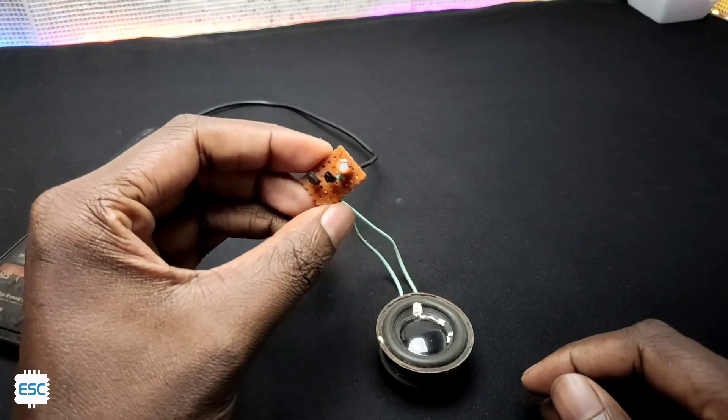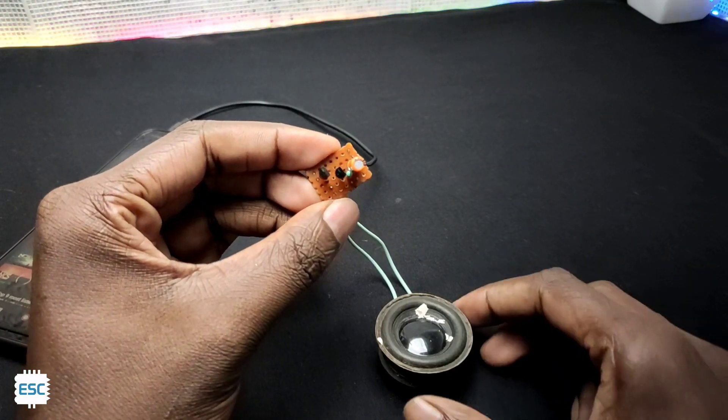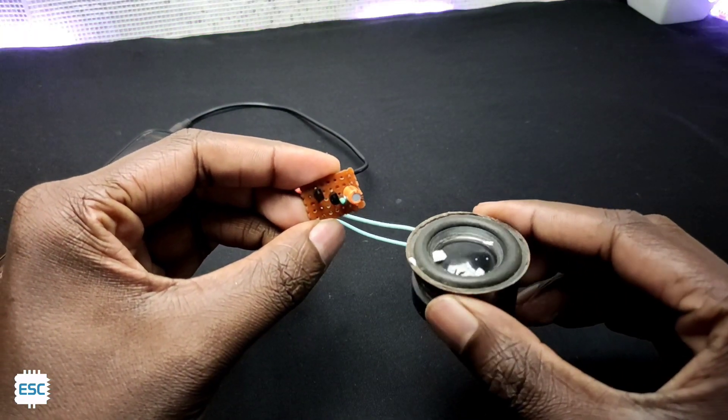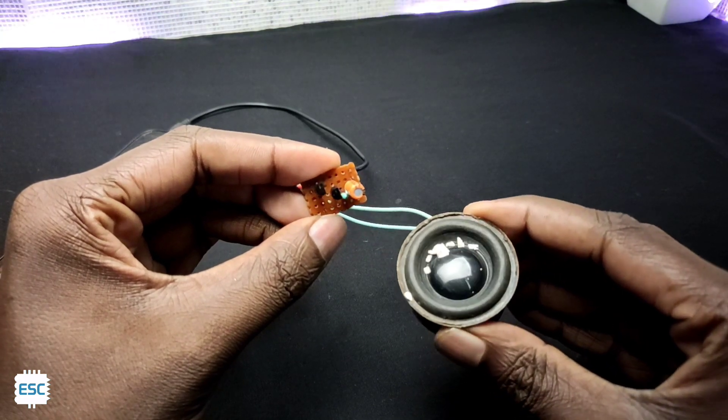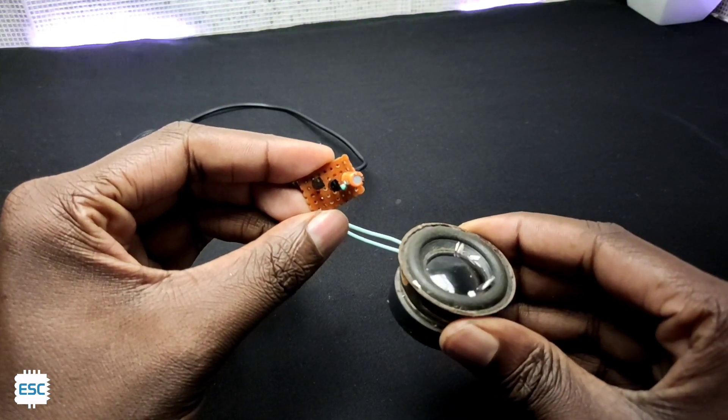Hello there, in this video I'm going to show you how to build this simple breadboard friendly audio amplifier using just two transistors, one capacitor, and one resistor. So let's get started.